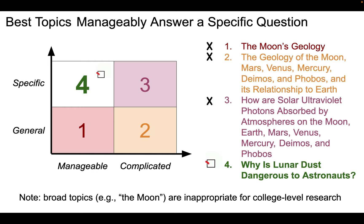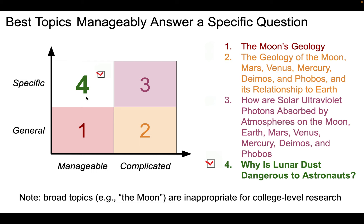Best topics manageably answer a specific question. We have a little grid here on the left-hand side, and I've broken this grid up into a couple of different regions. We have general and specific — those are the types of topics we're talking about — and then we have manageable topics and complicated topics. What we're really looking for is the sweet spot: a specific topic that's manageable. That's number four. Let's look at each one of these instances as an example.